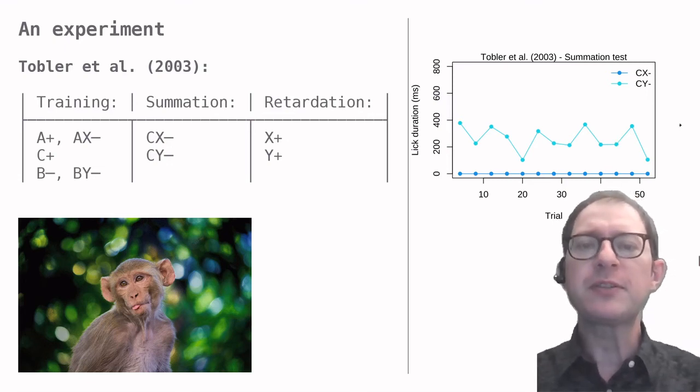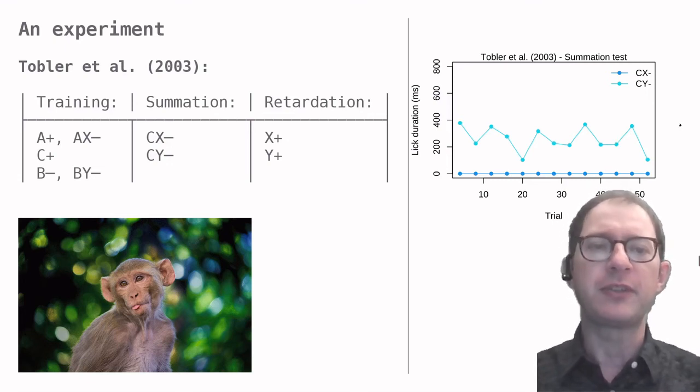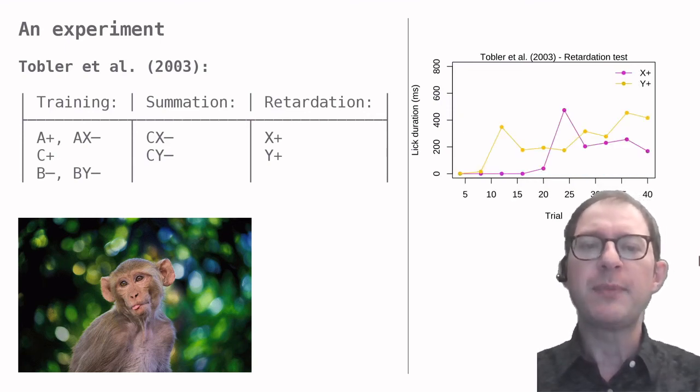At this point, the authors also performed a retardation test. Up to now, neither X nor Y have ever been reinforced, but we suspect from the results of the summation test that X is now an inhibitory stimulus, while Y is still a neutral stimulus. To further check this conclusion, the retardation test reinforces responding to both X and Y. The results were that monkeys learned CR to X much more slowly than to Y, further strengthening our conclusion from the summation test that X is indeed an inhibitory stimulus.